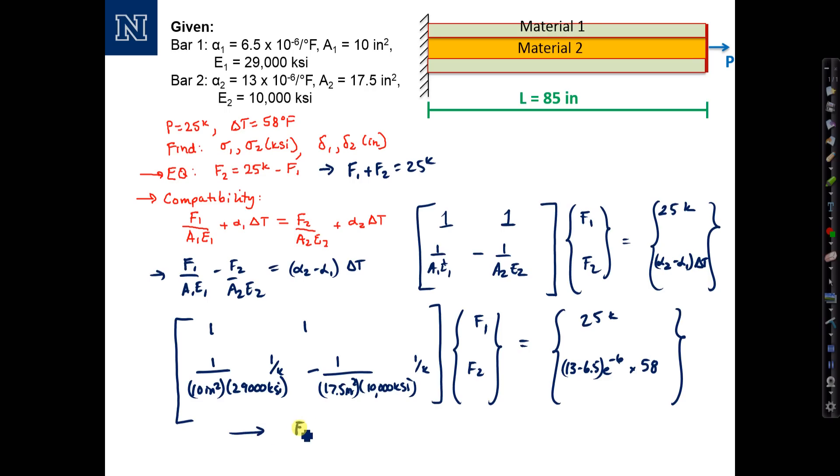F1 equals 56.7 kips—that's tension; F2 equals negative 31.7 kips—that's compression. You would proceed with the rest of the problem as before. That concludes this example.